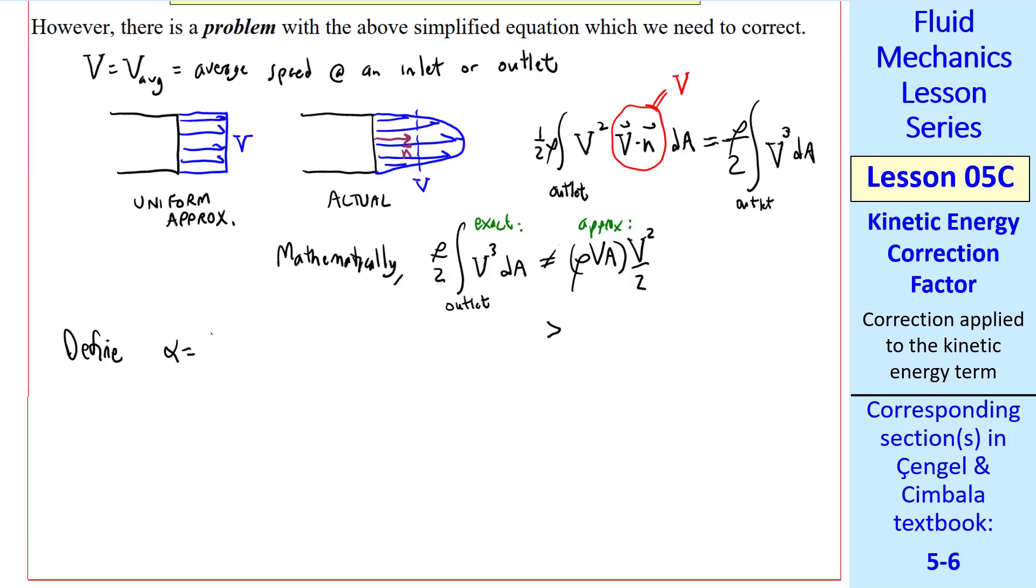We define α as the kinetic energy correction factor, which we get by taking the ratio of these two quantities on the right and left. Namely, we let α equal 1 over A, the integral over area A, which in our case is the outlet area, of u over v_avg cubed,